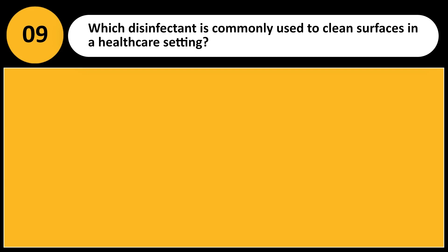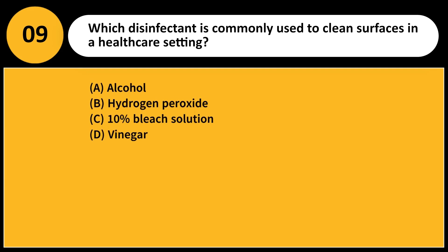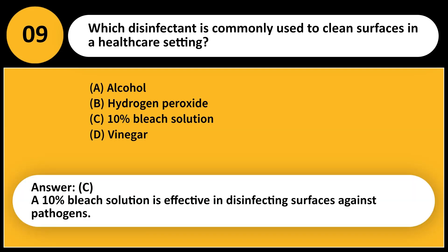Which disinfectant is commonly used to clean surfaces in a healthcare setting? A. Alcohol. B. Hydrogen peroxide. C. 10% bleach solution. D. Vinegar. Answer: C. A 10% bleach solution is effective in disinfecting surfaces against pathogens.